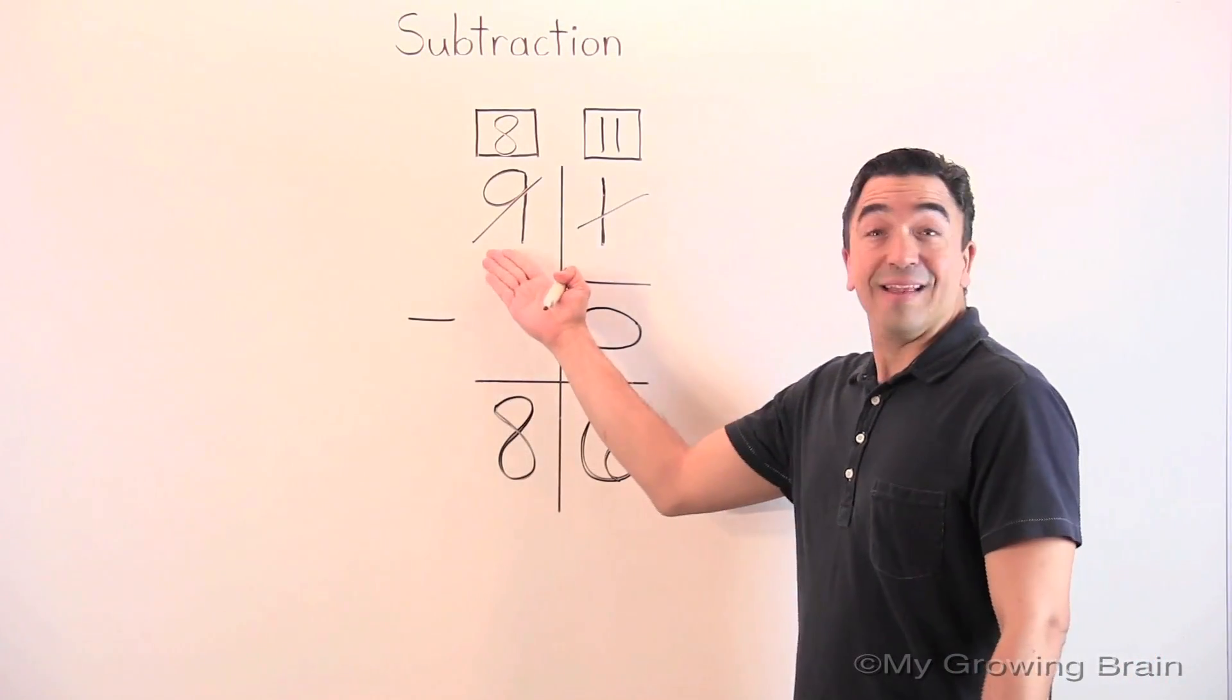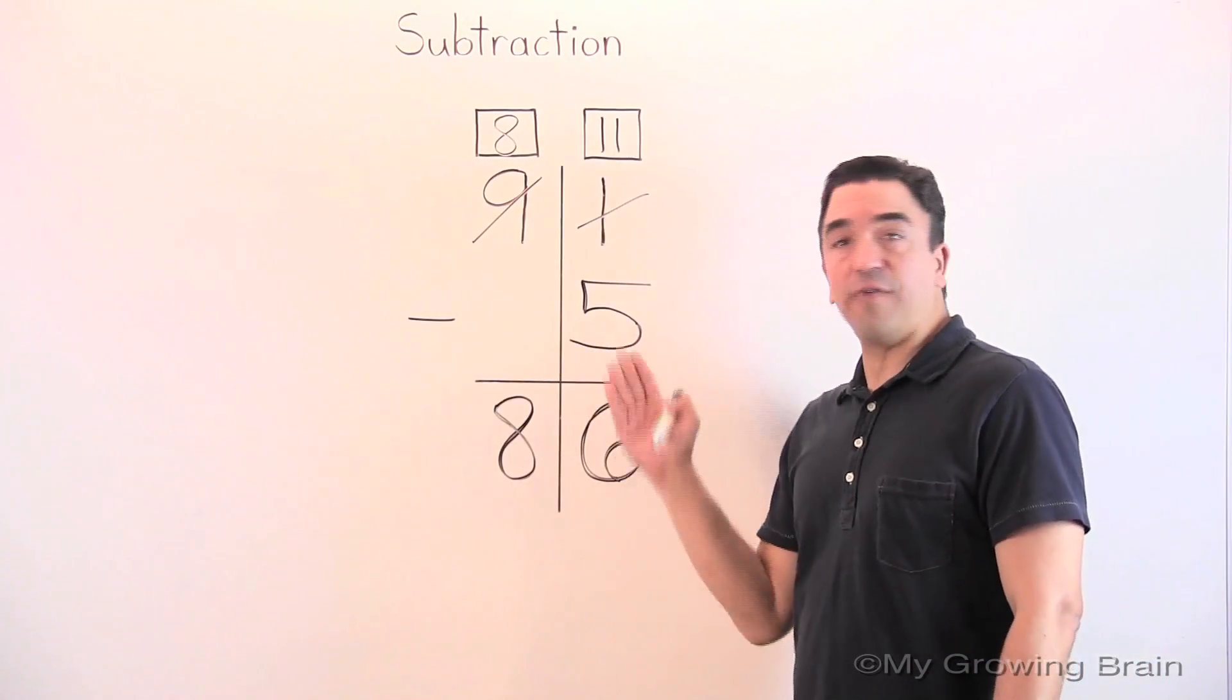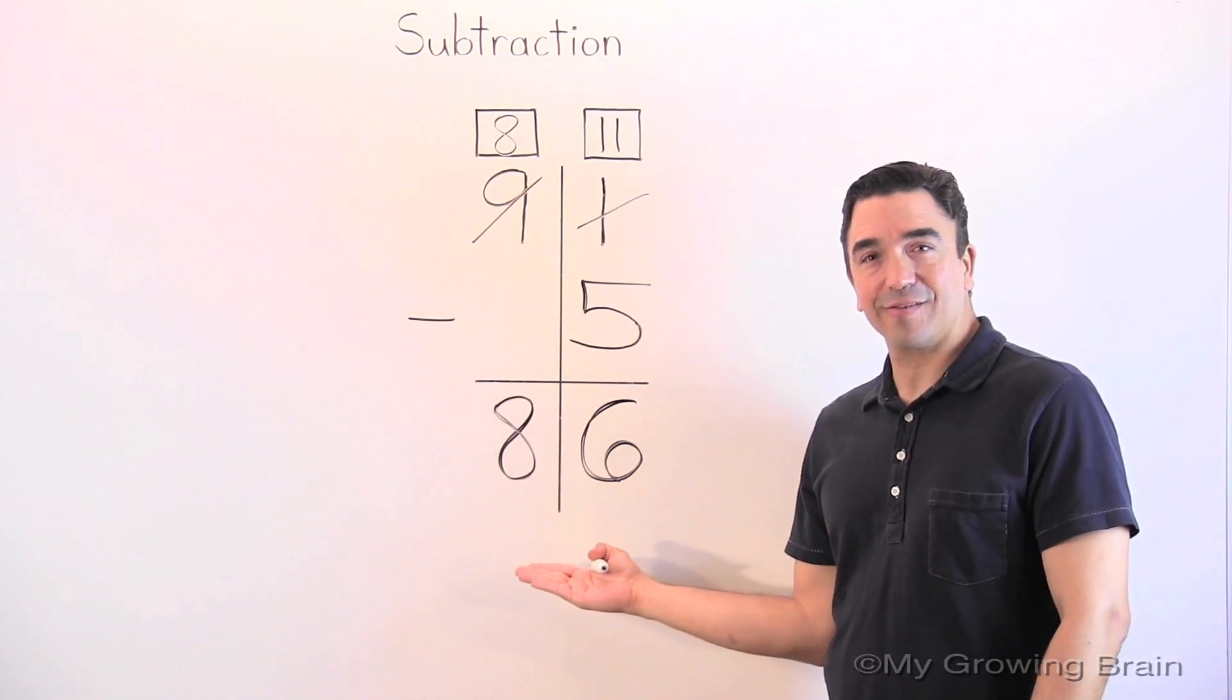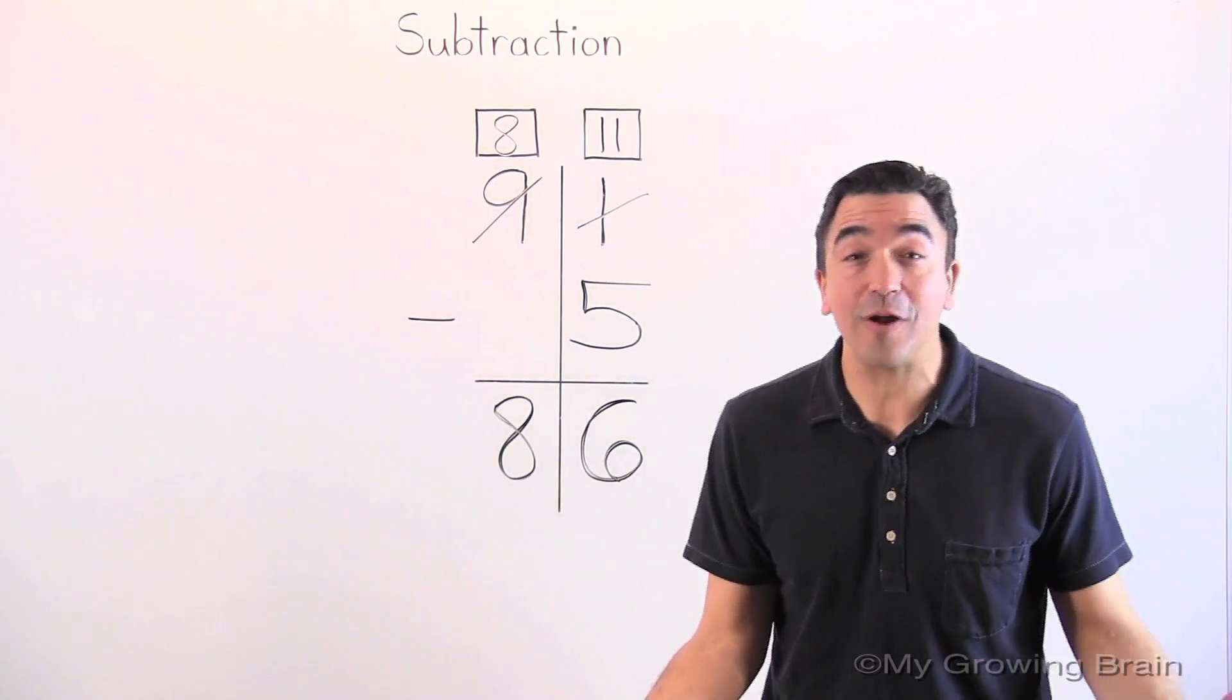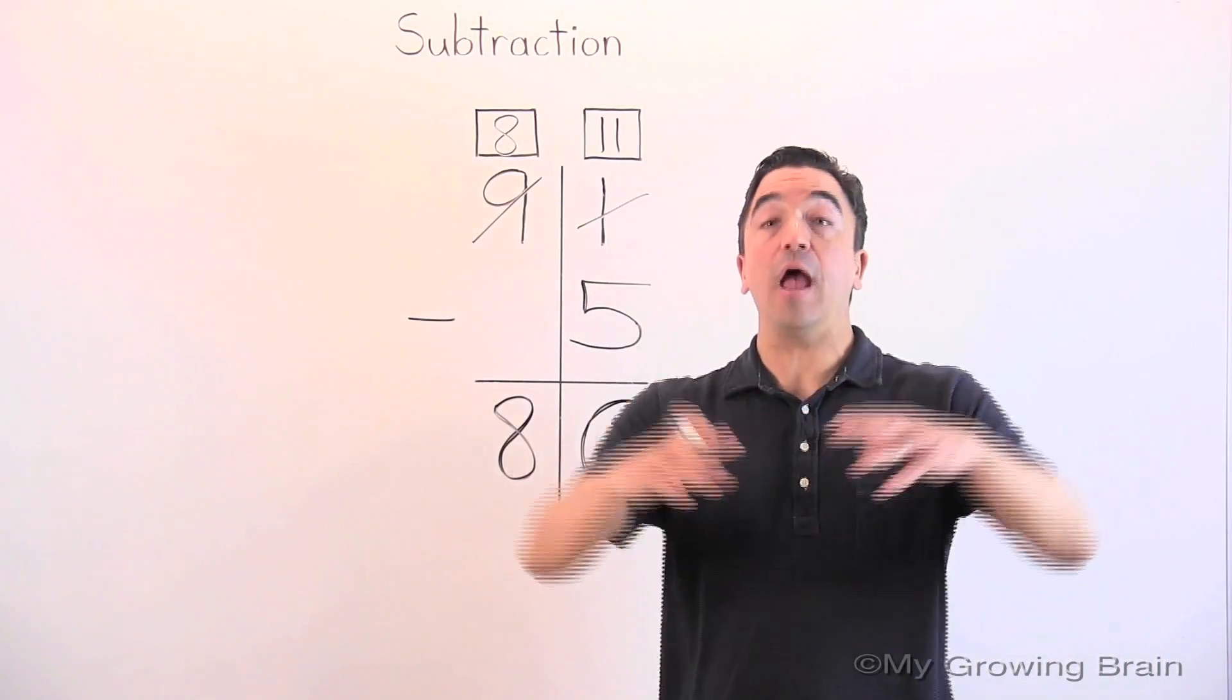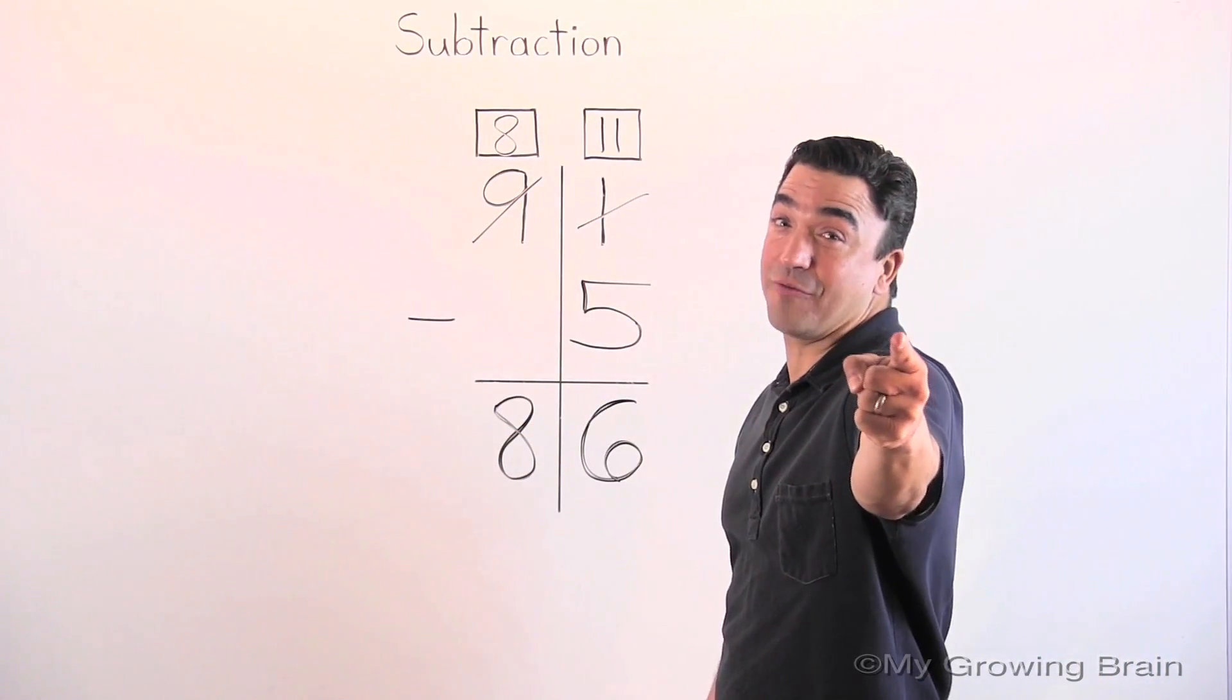So, 91 minus 5 gives us a difference of 86. That concludes our lesson on subtraction, Coach Mike at My Growing Brain Challenge Yourself.